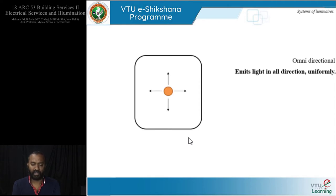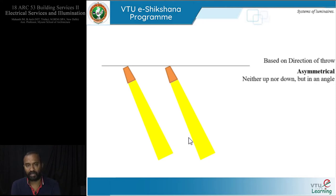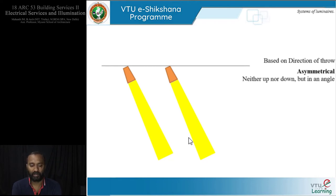Omnidirectional means the light source emits light in all directions uniformly — no up or down — with all 360 degrees covered. Next is asymmetrical lighting, which is neither straight up nor straight down but thrown at a particular angle. One example that comes to mind is at airports and railway stations where the national flag is always lit at night. If you observe, the luminaire is placed at some angle where it constantly lights up the flag.